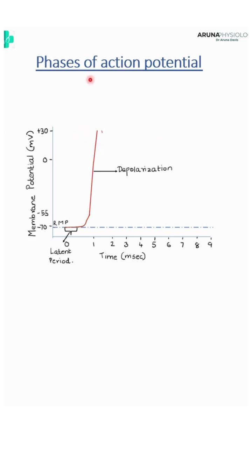Once it reaches plus 35 millivolt, the potential will start decreasing, and that phase is known as the repolarization phase.